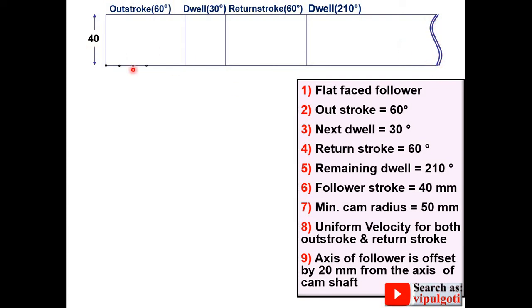Now divide the outstroke into 6 equal parts and give the name as 0, 1, 2, 3, 4, 5, 6 and draw the vertical line passing through all these points. Similarly divide the return stroke into 6 equal parts and give the name as 0 dash, 1 dash, 2 dash up to 6 dash and draw the vertical lines passing through all these points.